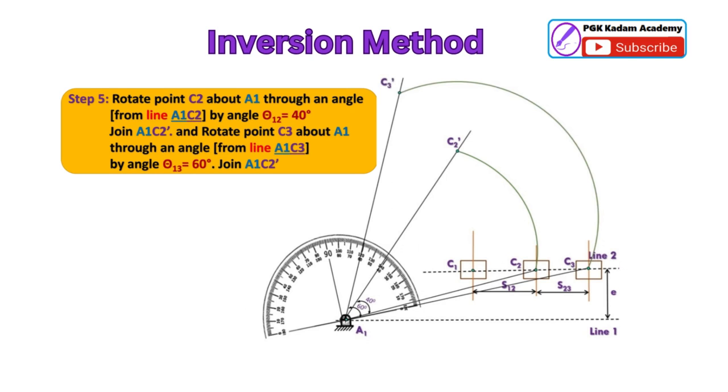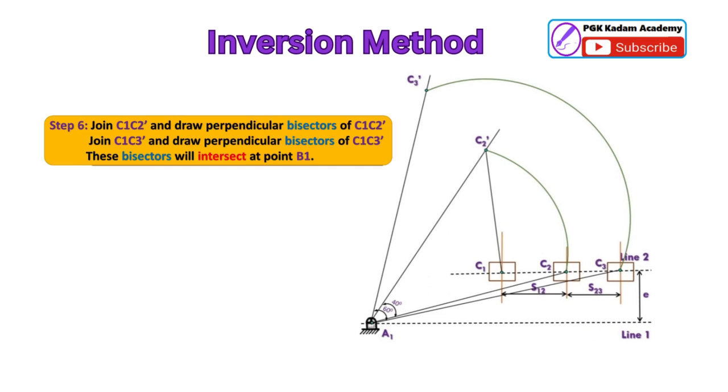Similarly, rotate point C3 about A1 through an angle from line A1 C3 by angle theta 1-C3 equal to 60 degrees. And then join by line A1 C3 dash.